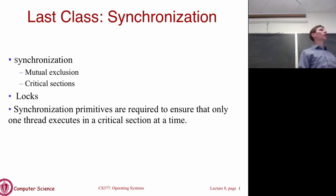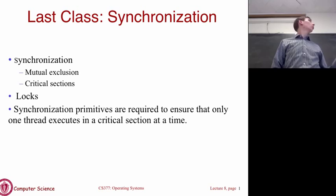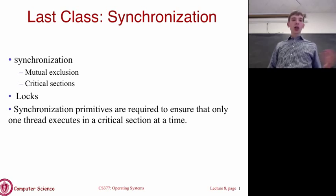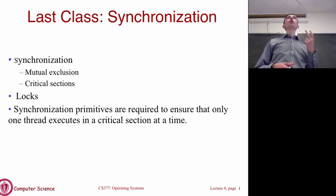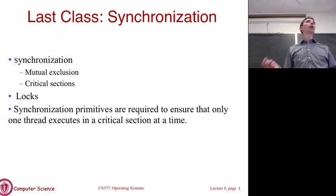Let's pick up where we left off. We were talking about synchronization — primarily locks, which allow us to get mutual exclusion and have critical sections where only one process or thread is executing at a time. We talked about hardware support, two ways to implement locks: disabling interrupts and atomic test-and-set instructions. We also talked about busy waiting and how you can avoid that.